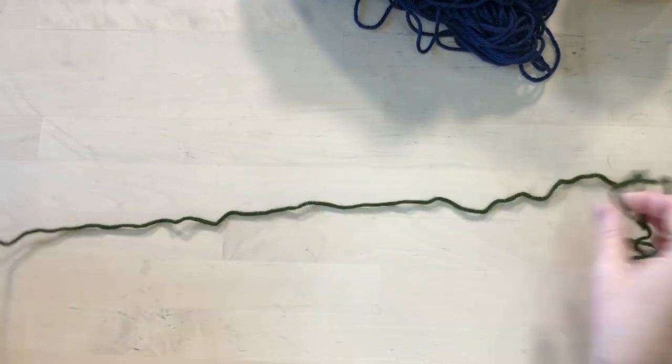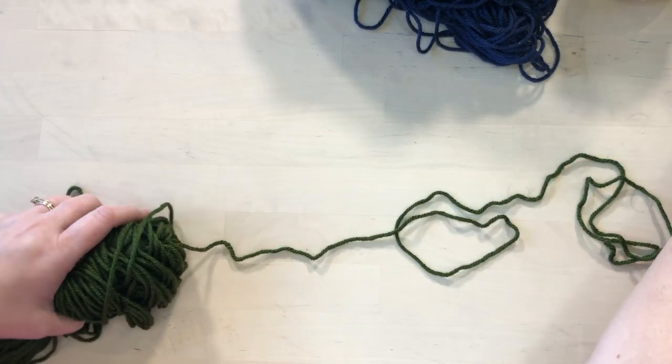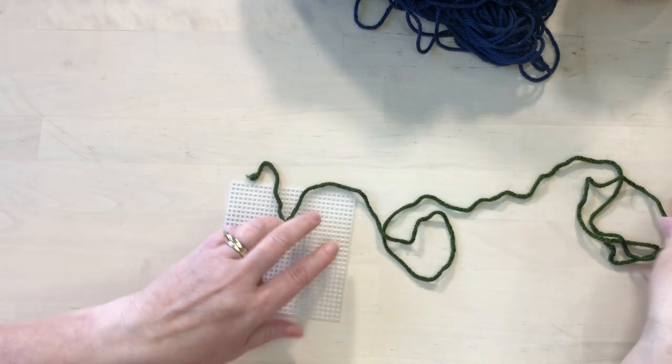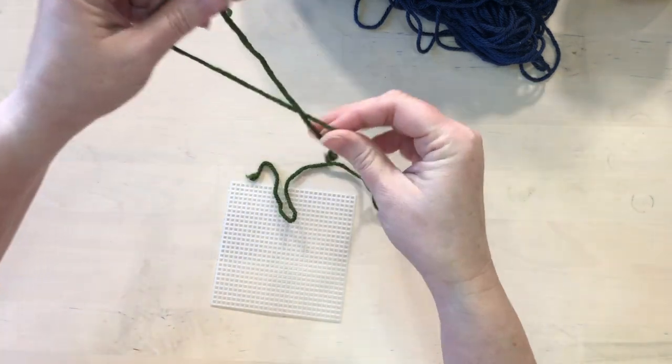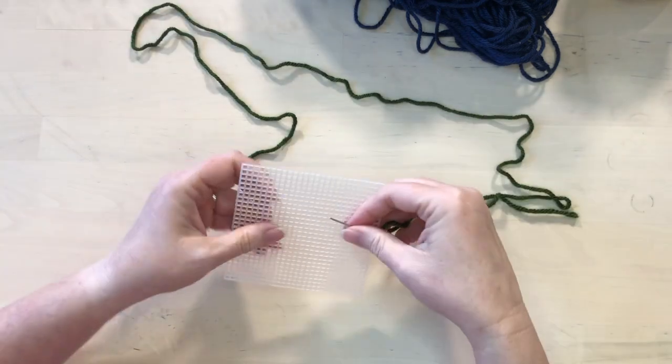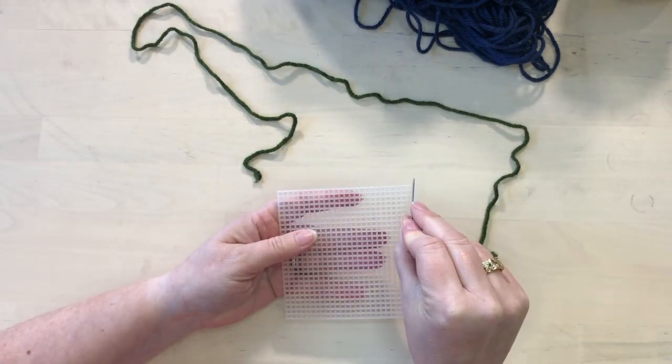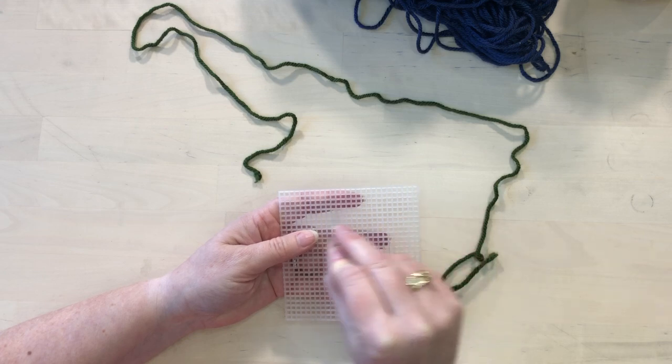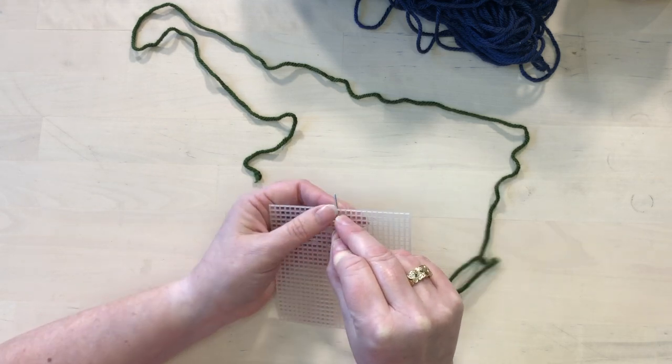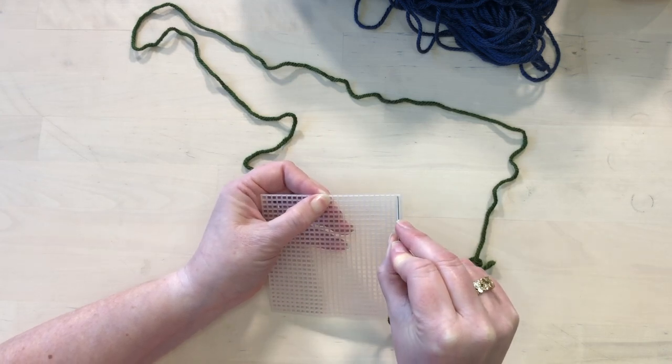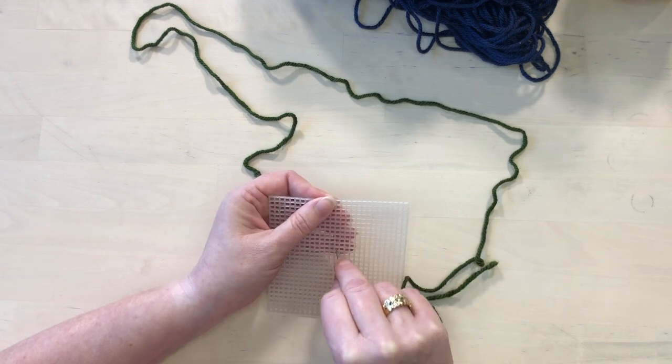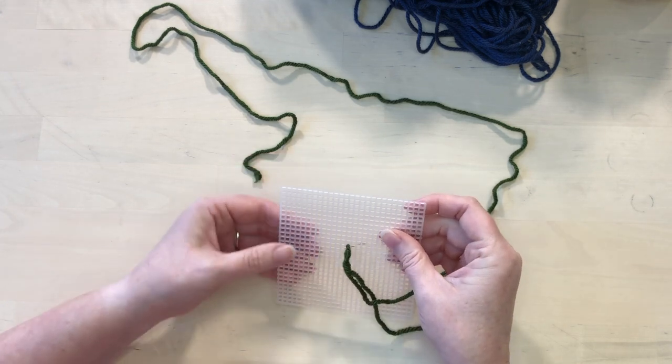And you'll see why it's longer in a minute. So we'll thread the needle and then we're going to find this center piece on here. So I know it's 27 across so 14 should be the middle, and we'll just double check. So this is the middle column.